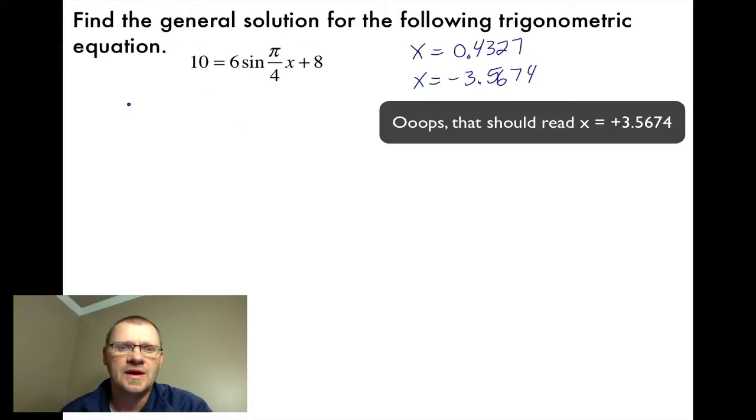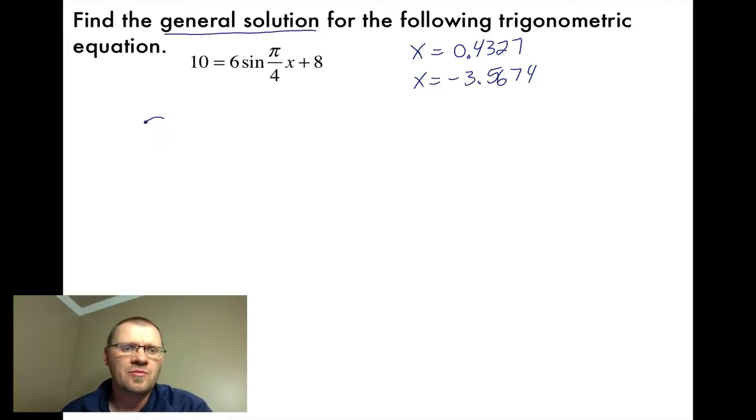We found our two answers, 0.4327 and -3.5674, and both those answers, if we plug it in for x, would satisfy this equation. But it wants the general solution. The last time we saw the general solution was when we were talking about moving around that unit circle, and that every time you move around that unit circle, you get the same place, you get some co-terminal angles. And so your general solution has to reflect that.